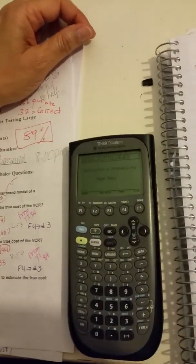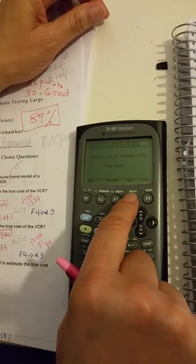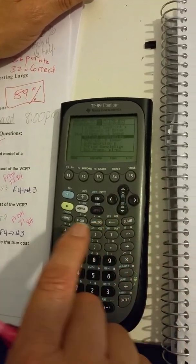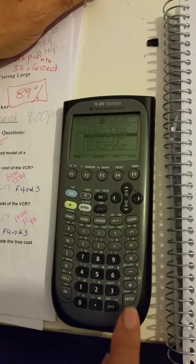We're already in the Statistics Probability Made Easy program, so we're going to use a confidence interval. That's F4. We push F4 and then go down to number four, find the sample size, and push enter.